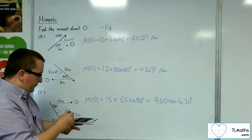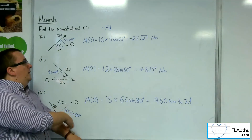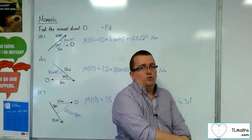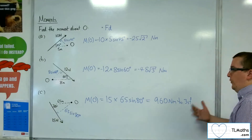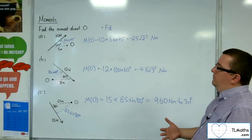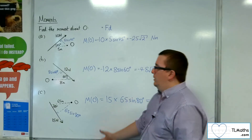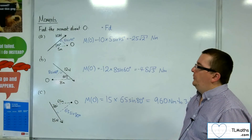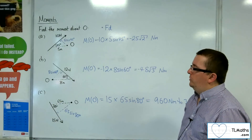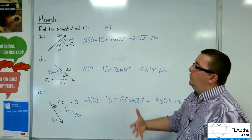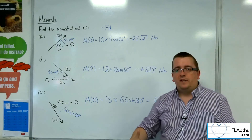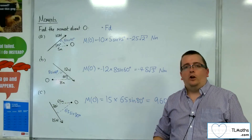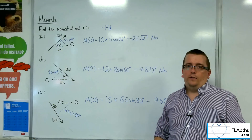So the method is completing a right-angled triangle, using basic SOHCAHTOA to get the opposite side of the triangle, then multiplying the force by that perpendicular distance, and then checking whether you're going clockwise or anti-clockwise.